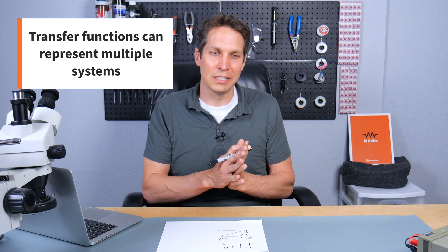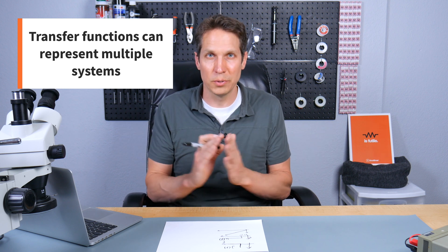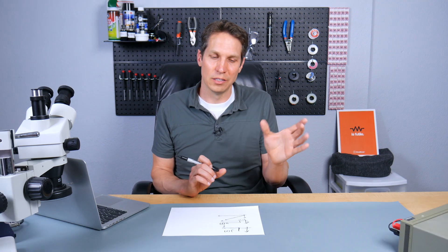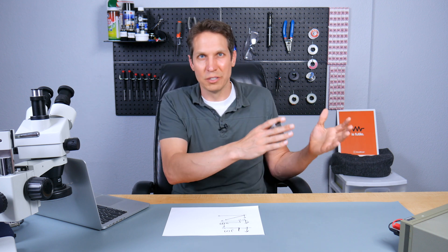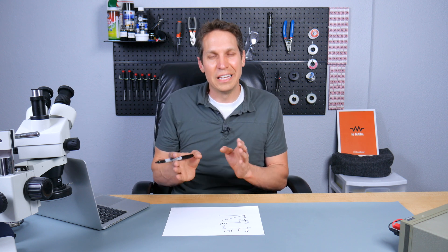And then finally, the third thing is that with these transfer functions, you can have a transfer function that represents multiple systems that are completely unrelated to each other. And this same transfer function can represent an electrical system, a mechanical system, multiple different types of electrical systems. And so you can't really take a transfer function and say, oh, looking at this transfer function, it must be representing an RLC circuit with resistance equal to this or capacitance equal to that.